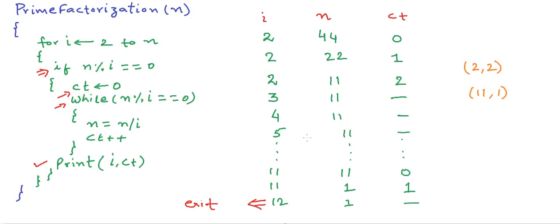Now there is one observation that can help us improve our algorithm. Once n is reduced to a prime number, we know that the only factor possible now is the number itself. For example, once n is reduced to 11 and we know 11 is prime, the only factor left is 11 and we can stop evaluating afterwards.